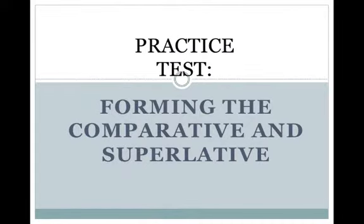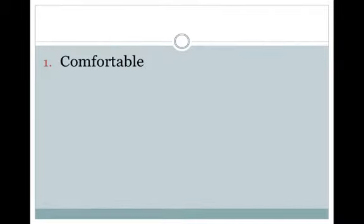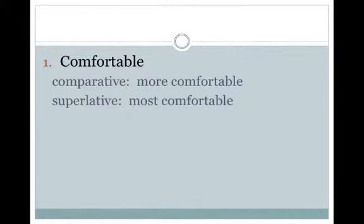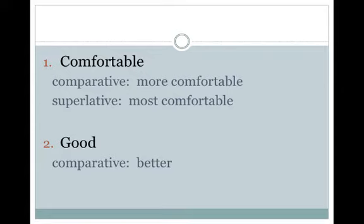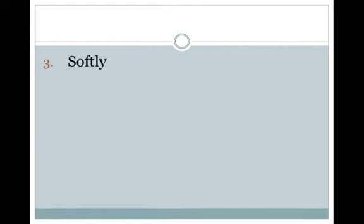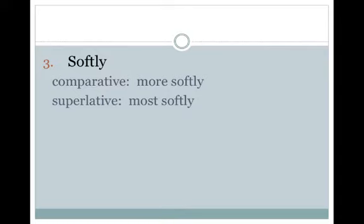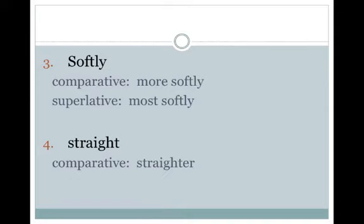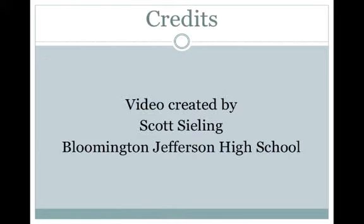Let's take a practice test forming the comparative and superlative degrees. Number one: comfortable — comparative: more comfortable, superlative: most comfortable, because there are three or more syllables. Number two: good — comparative: better, superlative: best — one of those irregular degrees. Number three: softly — comparative: more softly, superlative: most softly — an LY adverb. Number four: straight — comparative: straighter, superlative: straightest — a one-syllable word. That's it for degrees of comparison. Now practice on your own.